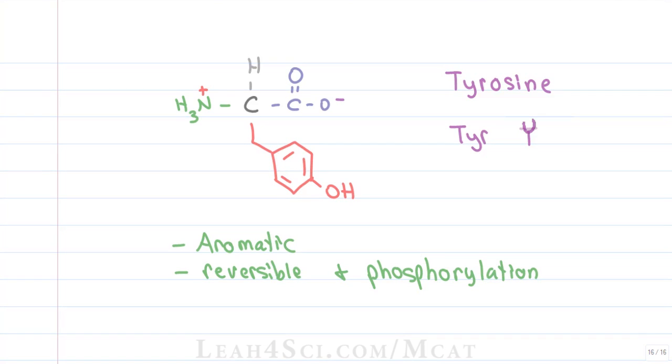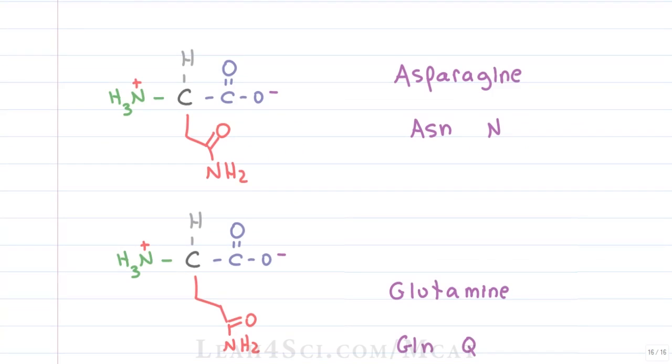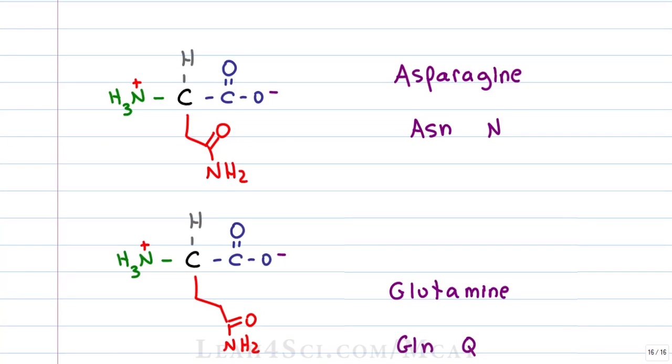The next two amino acids are very similar in structure, so let's look at them together. We have asparagine, which is ASN or N, and glutamine, which is GLN or Q. Notice that each of these amino acids has a carbon chain—asparagine has just a CH2, glutamine has two CH2s—and they end with a carbonyl and an NH2, which makes the functional group amide. Some of you may hear it as amide.